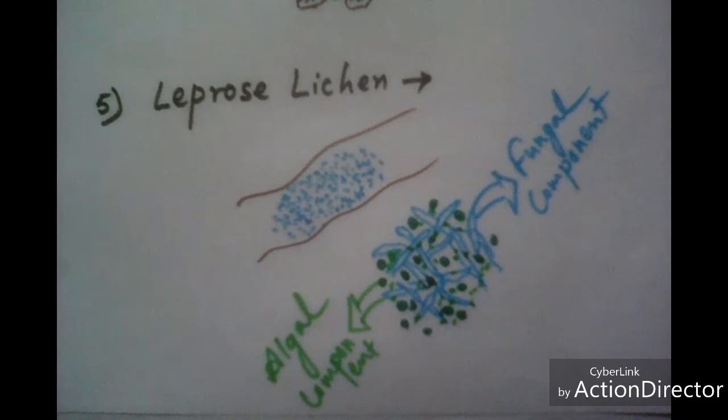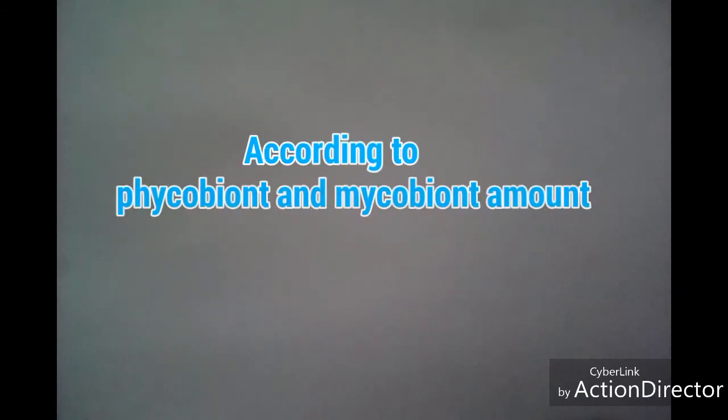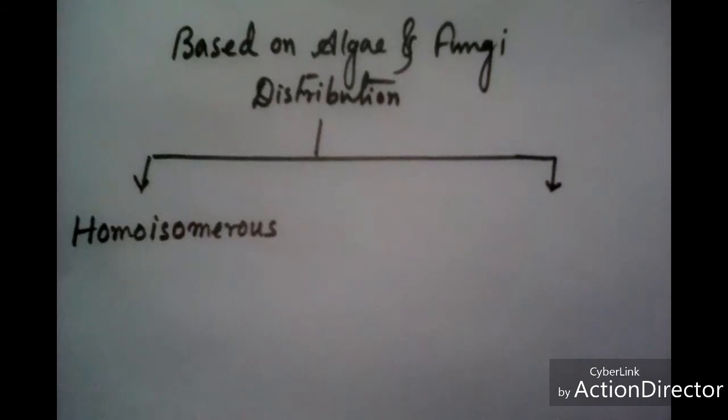So this is all about the thallus structure of lichen. Now on the basis of algae and fungi distribution, lichen also divides into two types: one is homoisomerous lichen and another is heteroisomerous lichen.